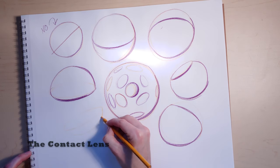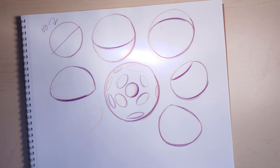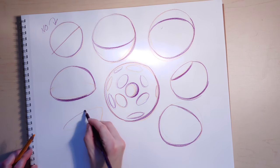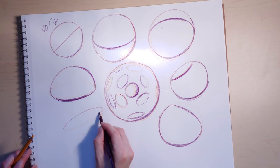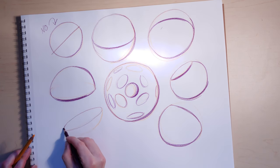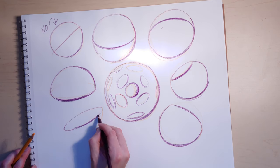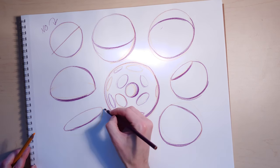So I call this one the contact lens because this is a very shallow slice. And you'll use this sort of variation when you're going to draw bowls and things like that. But to me, it looks like a contact lens where you take about 20% of the sphere and cut off the rest.